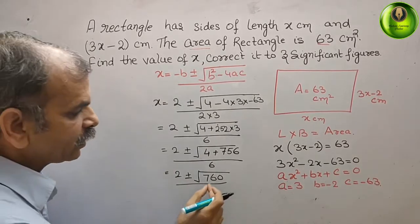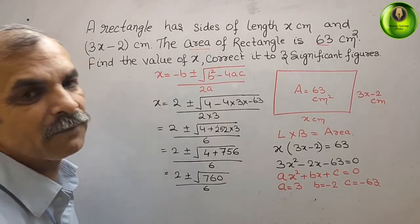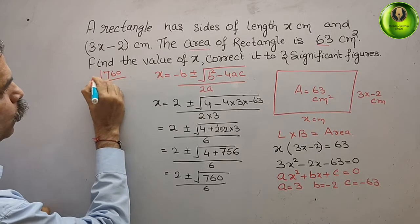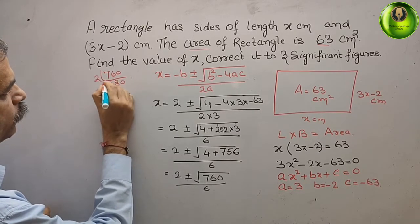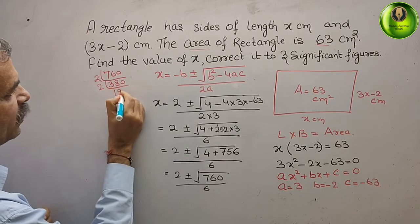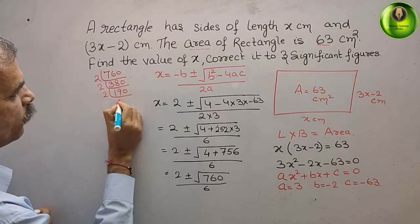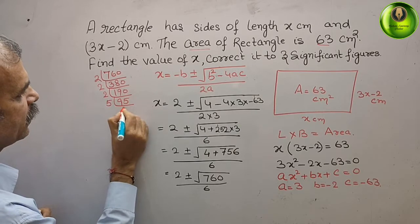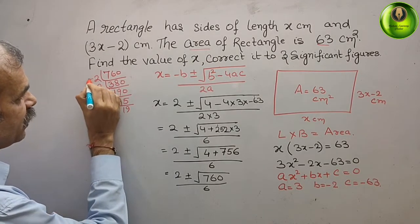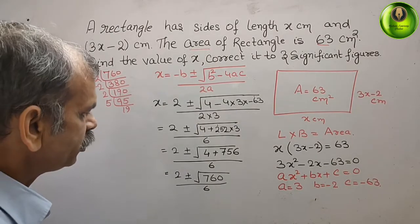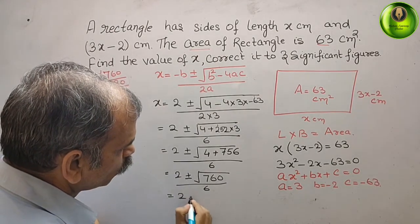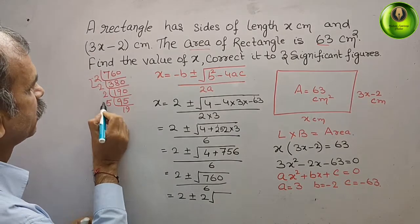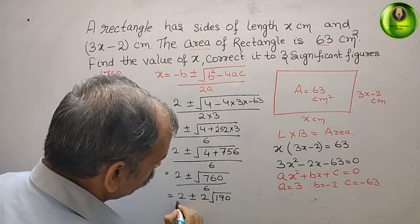Now, we will find out the factors of 760. What are the factors of 760? First, we should know. So, factors of 760. 2, 380. Then, 2, 190. Then, again, 2, what we will get? 95. Then, 5. Then, 19. So, now, you can see the pair here. That means, what is your value? Value is your 2 plus and minus 2 root. And here it comes, 190. By 6.